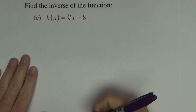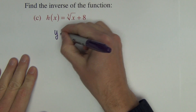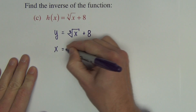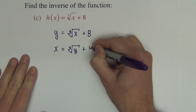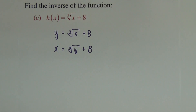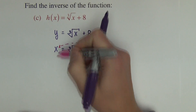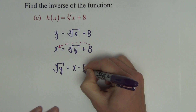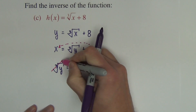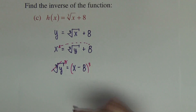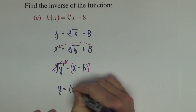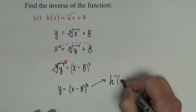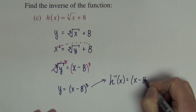Last problem: h of x equals the cube root of x plus 8. We begin with y equals cube root of x plus 8, then switch x and y to get x equals cube root of y plus 8. Move the 8 across: cube root of y equals x minus 8. Cube both sides to get rid of the cube root, ending up with y equals x minus 8 cubed, or h inverse of x equals x minus 8 cubed.